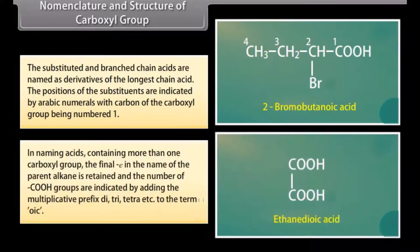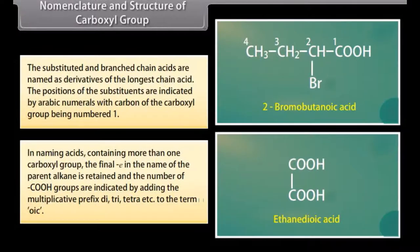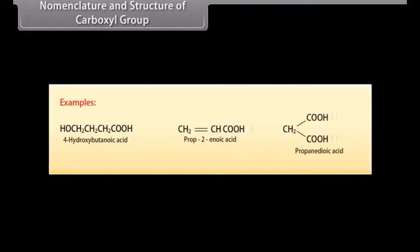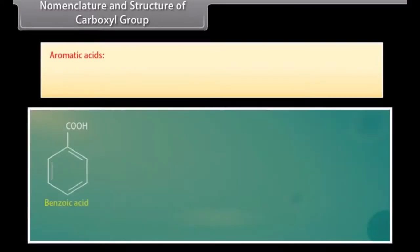In naming acids containing more than one carboxyl group, the final 'e' in the name of the parent alkane is retained and the number of carboxyl groups are indicated by adding the multiplicative prefix di, tri, tetra, etc., to the term 'oic'. Examples: 4-hydroxybutanoic acid, propenoic acid, propanedioic acid. For aromatic acids, the simplest aromatic monocarboxylic acid C6H5COOH is named as benzoic acid, and the IUPAC names of the substituted acids are derived from benzoic acid.